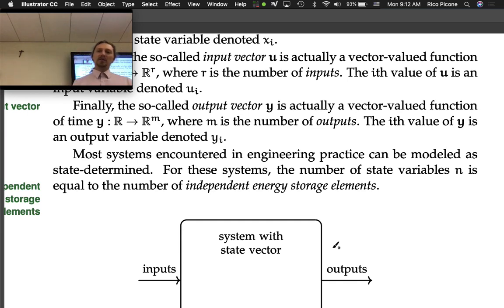Most systems encountered in engineering practice can be modeled as state-determined. For these systems, the number of state variables n is equal to the number of independent energy storage elements. We've been talking about energy storage elements - A types and T types.